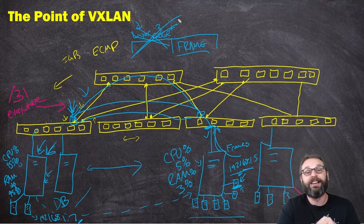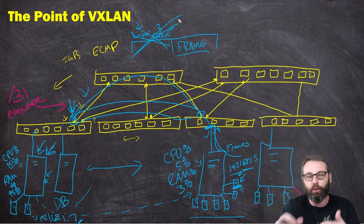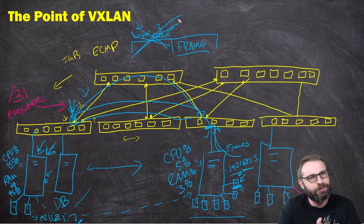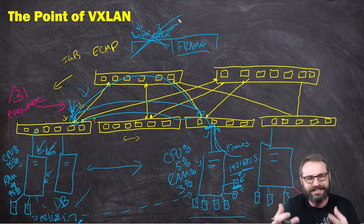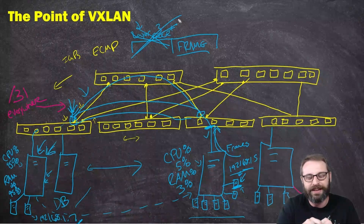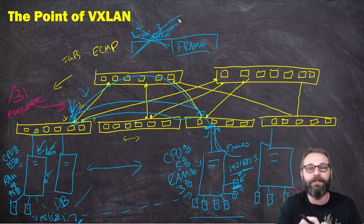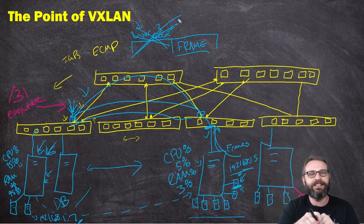That is the point of VXLAN — tunneling traffic within a broadcast domain over a layer 3 core. In the next video, we're going to examine why we also talk about EVPN, since the whole point of the data center topology is EVPN VXLAN. I hope this has been informative for you, and thank you for viewing.